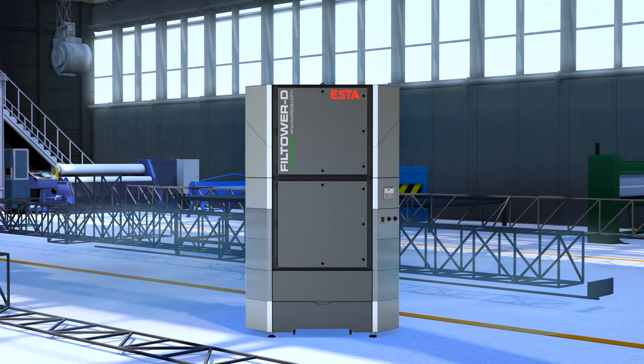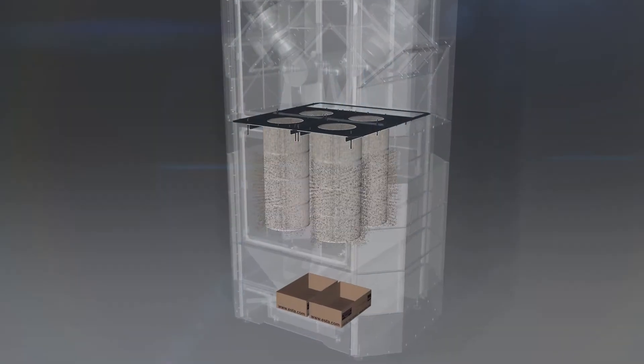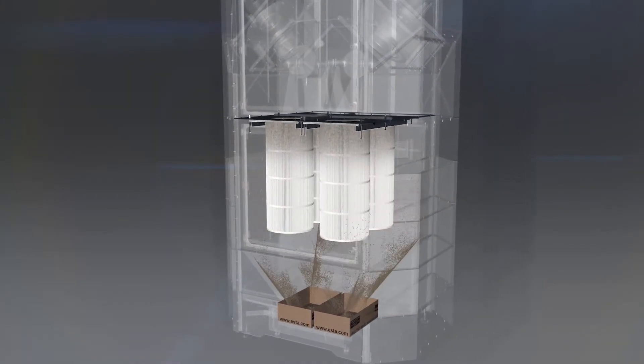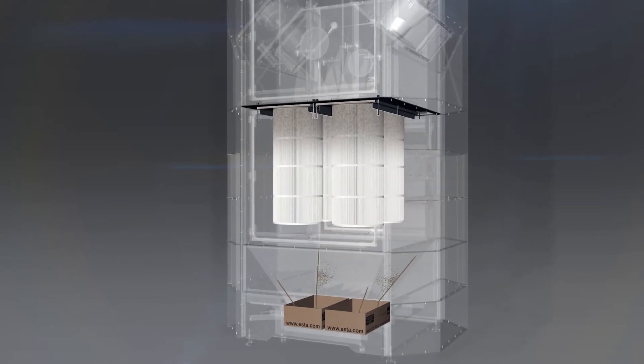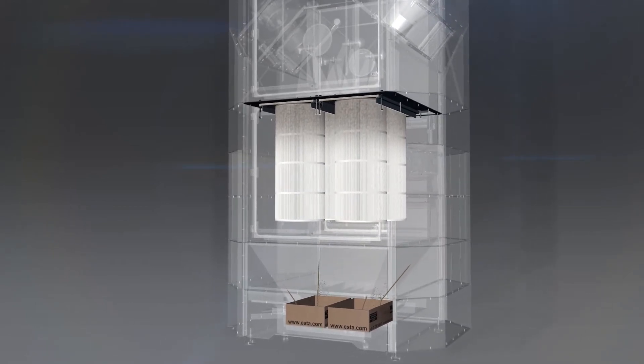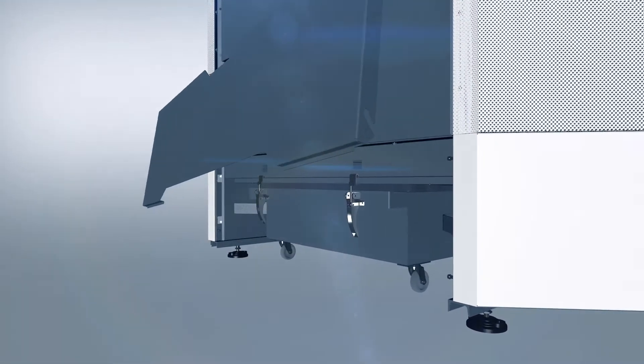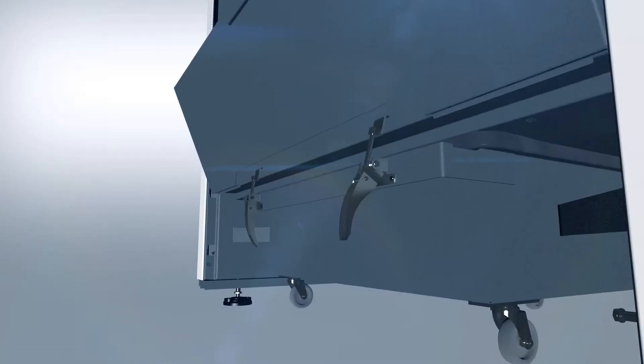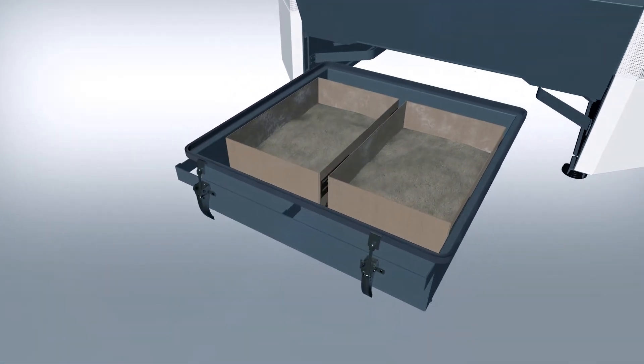Filter cartridges are cleaned fully automatically during operation by means of compressed air blasts. Dirt particles sticking to the filter cartridges are removed and fall down into a mobile dust collection drawer. Two removable collection boxes in the drawer ensure dust-free disposal of the separated material.